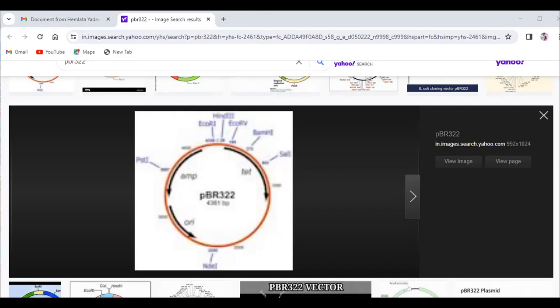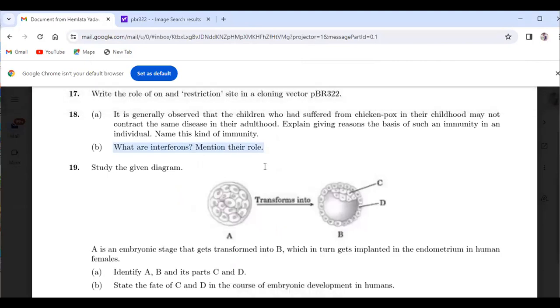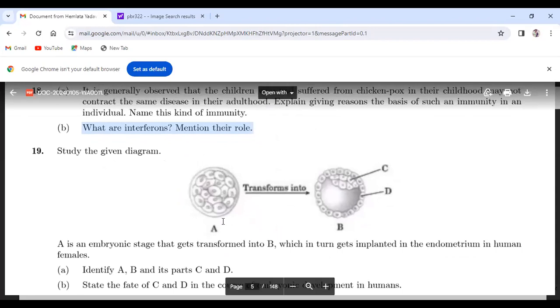Now we will move to the next question. It is generally observed that children who suffer from chickenpox in childhood may not contact the same disease in their adulthood. That means the children have developed acquired immunity. Interferons are proteins released by already viral infected cells which will protect other cells from viral attacks. Interferons are also called cytokine barriers.